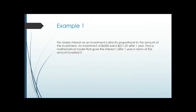Example one is a direct variation problem: the simple interest on an investment is directly proportional to the amount of the investment. An investment of $6,500 earns $211.25 after one year. Find a mathematical model that gives the interest i after one year in terms of the amount invested p. The phrase 'in terms of' tells us i is the output and p is the input.